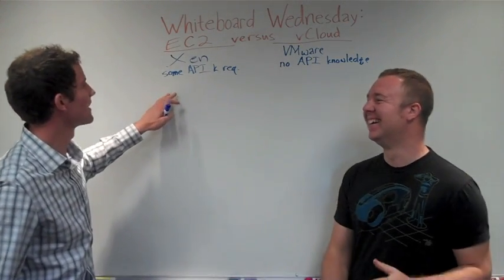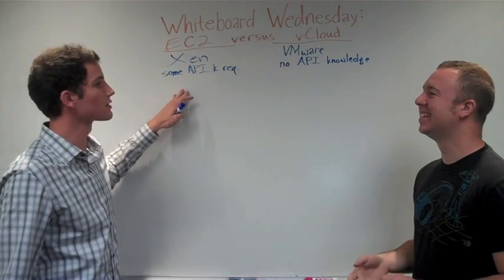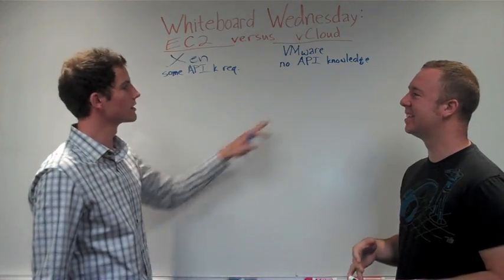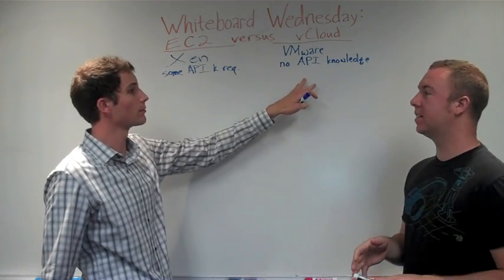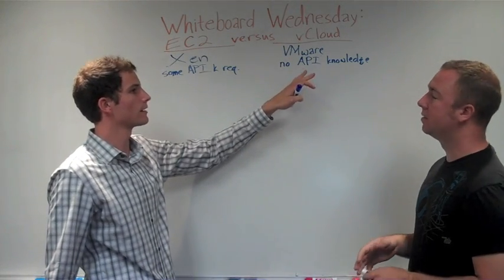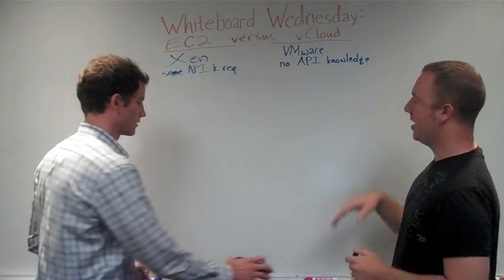So EC2 requires some API knowledge — it is a self-service cloud. vCloud is a self-service public cloud and internal cloud.